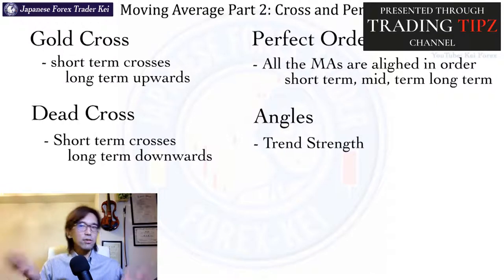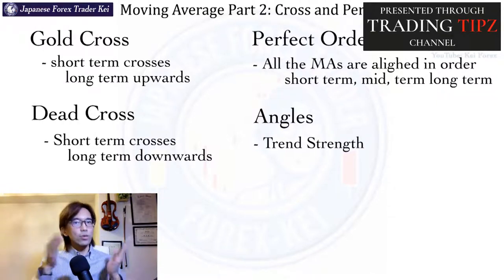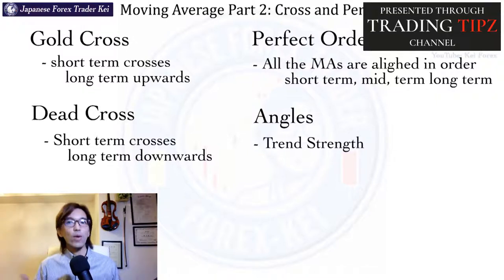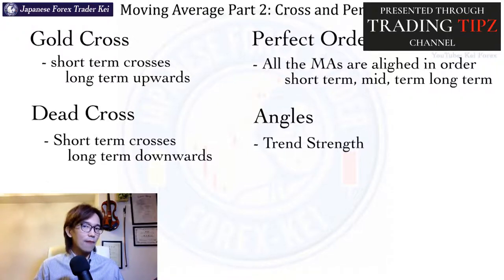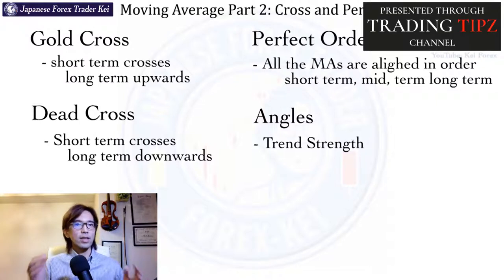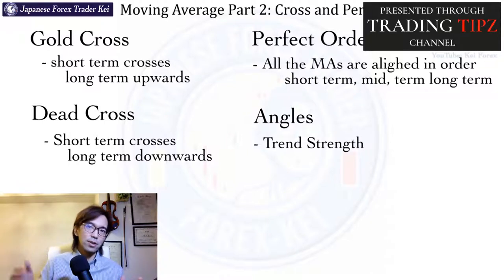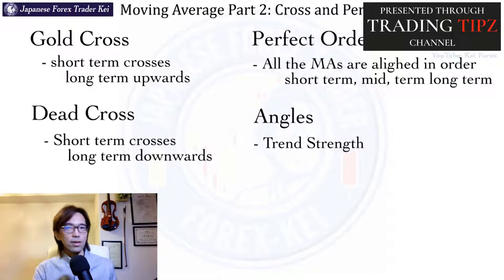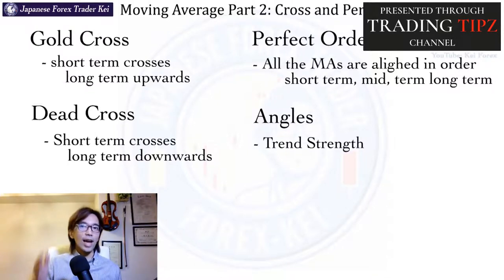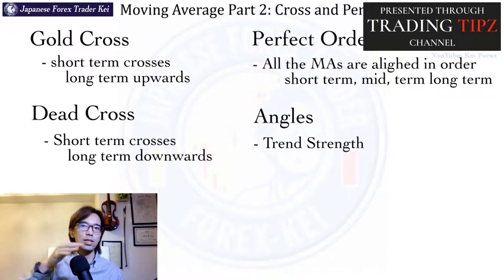In contrast, dead cross happens when the short term crosses the long term downwards. And perfect order is when all three moving averages — short term, mid term, and long term — point towards the same direction. Like when the market is in a range, you will see all the MAs are interacting with each other, but when there is a concrete trend, let's say a bull trend, then all the MAs are aligned — short, mid, and long term from the candlesticks — and point towards the upside.